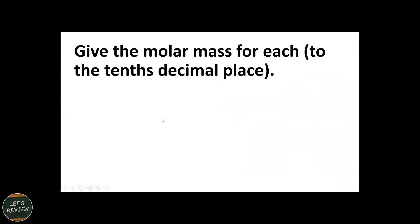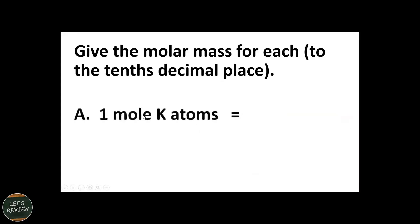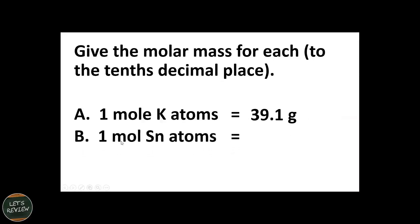Molar mass is always expressed in grams. For example, one mole of potassium atoms is 39.1 grams — you can find this in your periodic table. Another example: one mole of tin atoms is 118.7 grams.